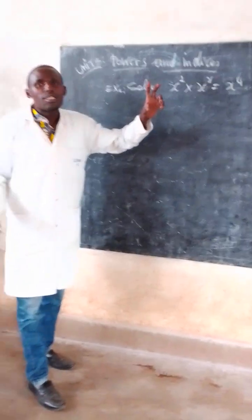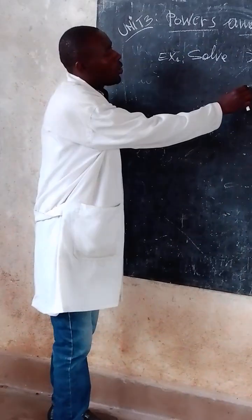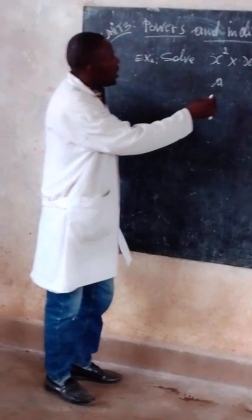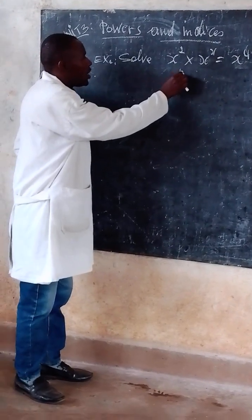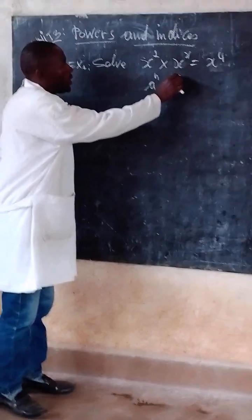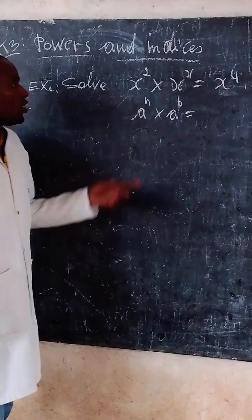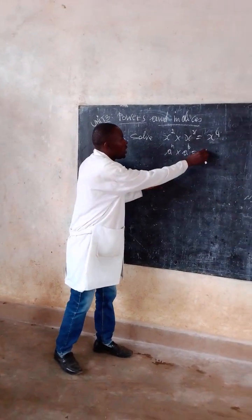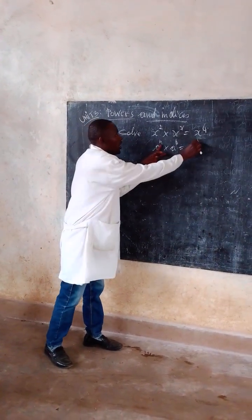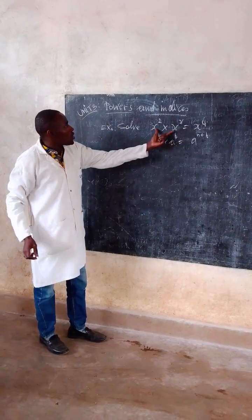How to find the value of x? You know the law of powers. You may get a to the power m times a to the power b, and this is equal to a to the power m plus b.